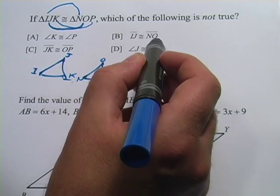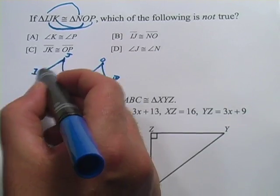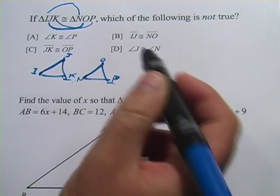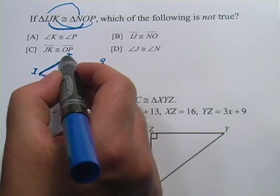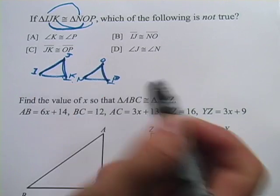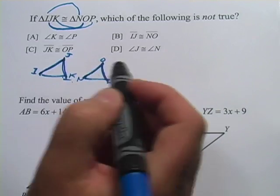B says IJ is congruent to NO, so here's IJ, here's NO. Those are corresponding parts, so that's definitely true. JK is congruent to OP, so here's JK, here's OP, corresponding parts, so that's true.